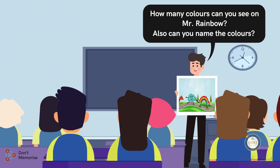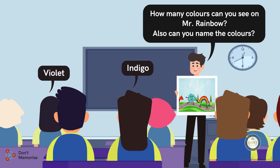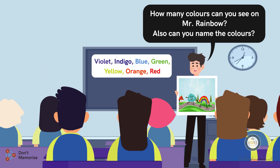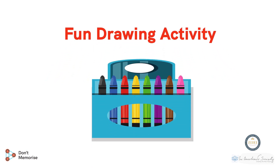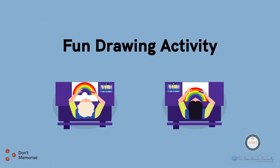Do help them identify the new colors like indigo and violet. Write the students' responses on the board. After the students have identified all the colors, it's time to initiate the fun drawing activity. Ask the students to identify these same colors in their color boxes, following which we shall ask them to draw a rainbow using just those colors.